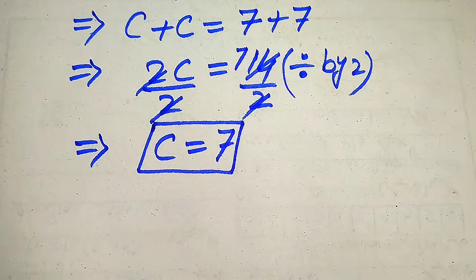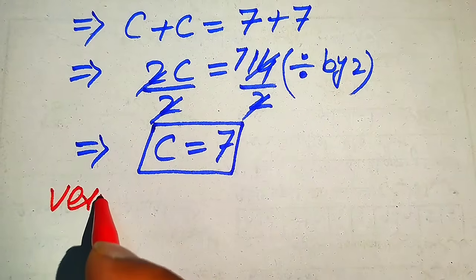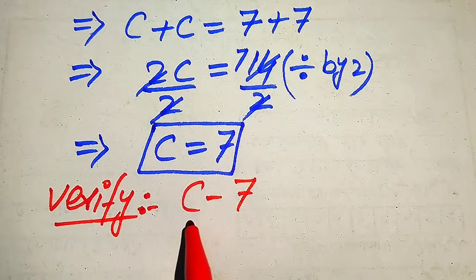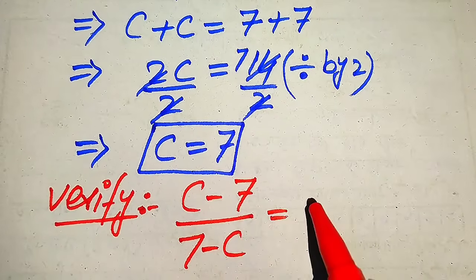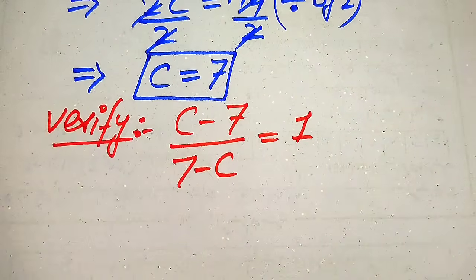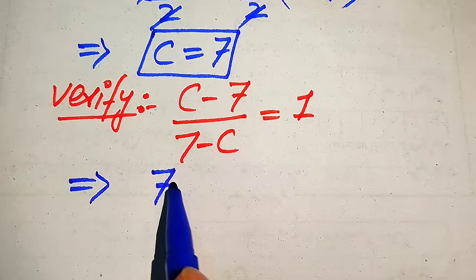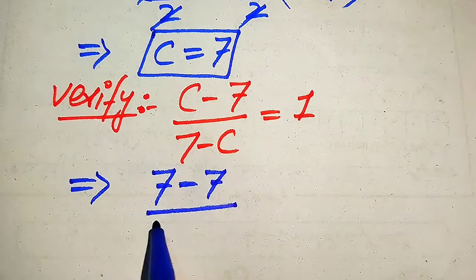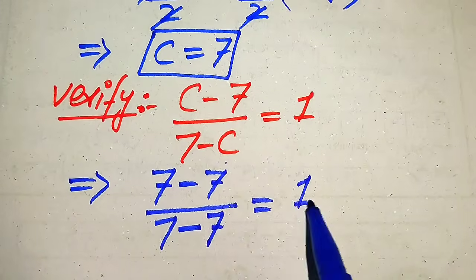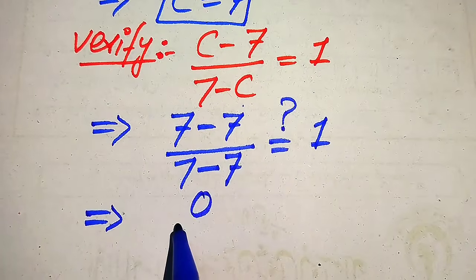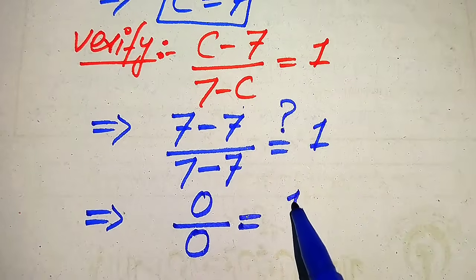This is the first root of the given equation from the first method. Now in the next step we need to verify whether this root is a solution of the given equation or an extraneous root. We copy down the given equation: c minus 7 divided by 7 minus c is equals to 1. When we substitute c equals 7, it becomes 7 minus 7 divided by 7 minus 7 equals 1, which gives us 0 divided by 0 equals 1.